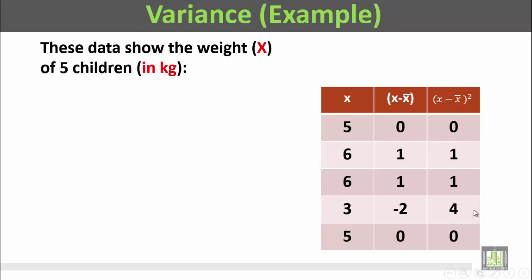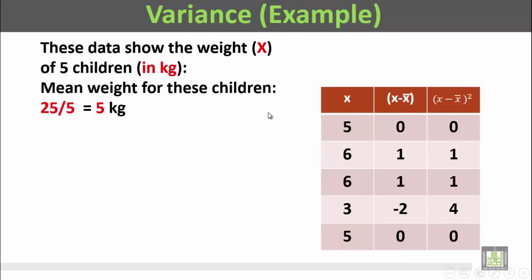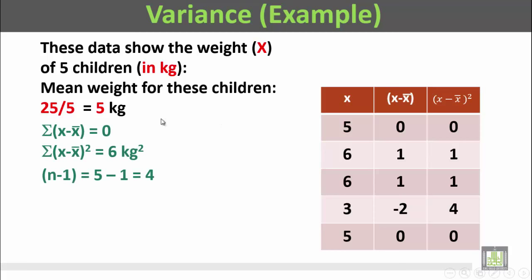The first child is 5 kilograms, the second is 6, the third is 6, the fourth is 3, and the fifth is 5 kilograms. The mean weight for these children is 5 + 6 + 6 + 3 + 5, that's 25, divided by the number of children, which is 5. So 25 divided by 5 is 5 kilograms — the mean weight is 5 kilograms.